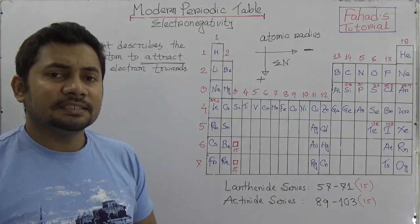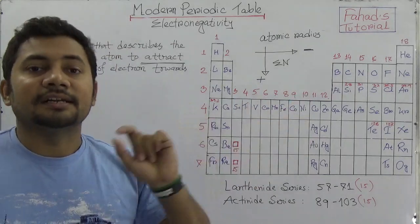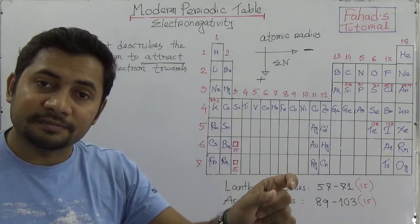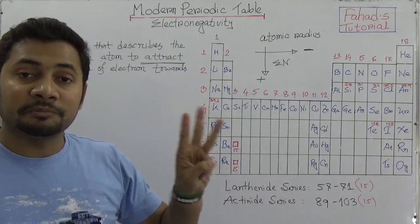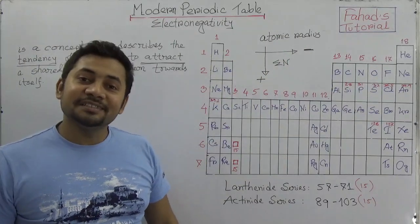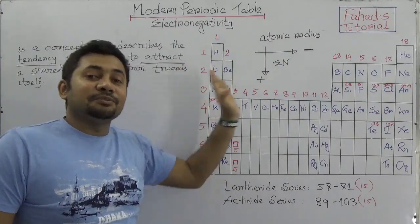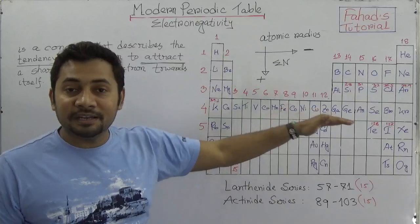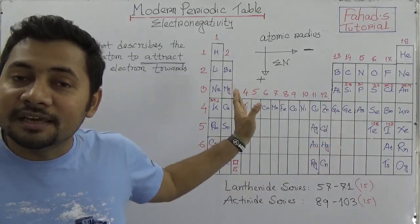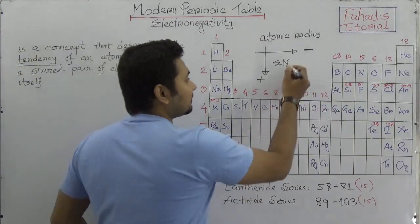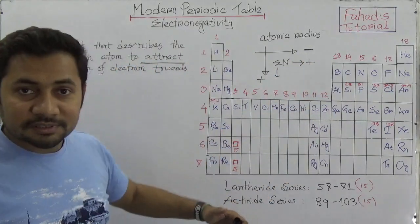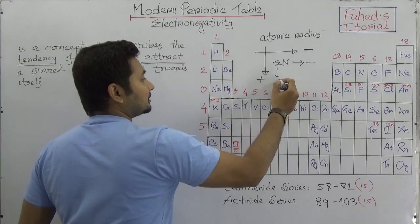Ionization energy, electron affinity, and electronegativity — all three periodic properties are the vice versa of atomic radius. So going from left to right across periods, as atomic radius decreases, electronegativity will increase. And going downwards in a group, electronegativity will decrease.